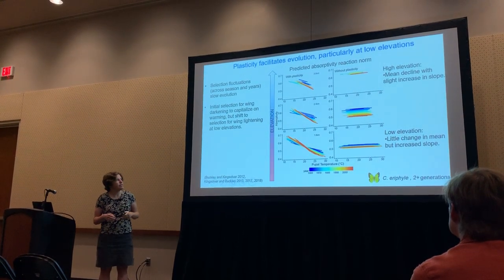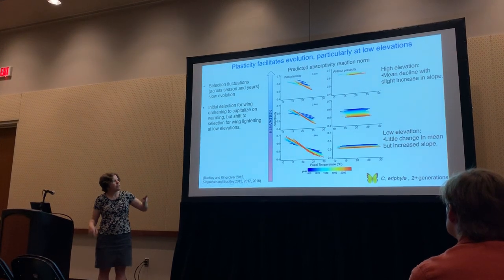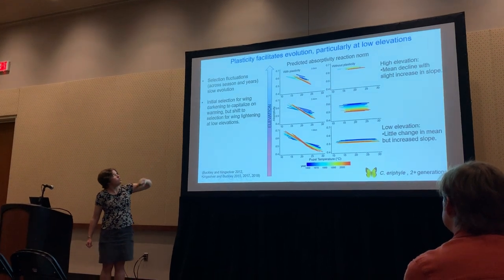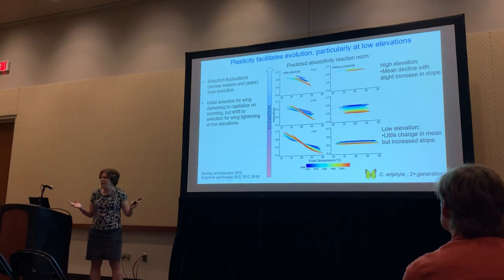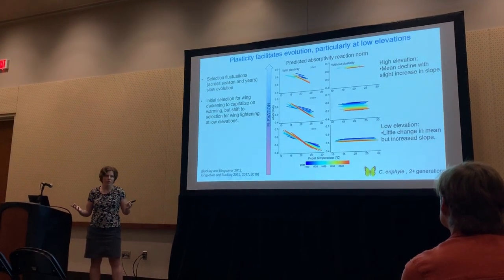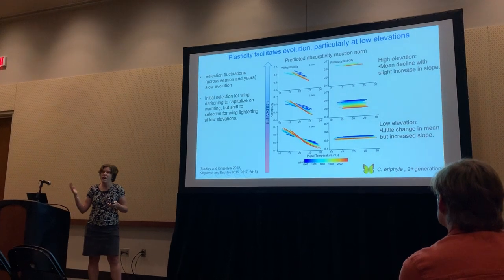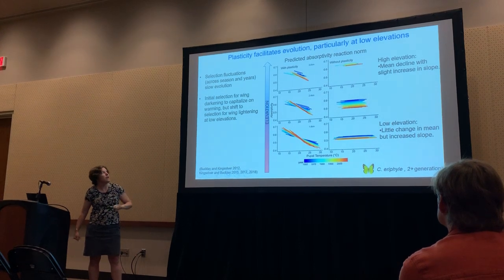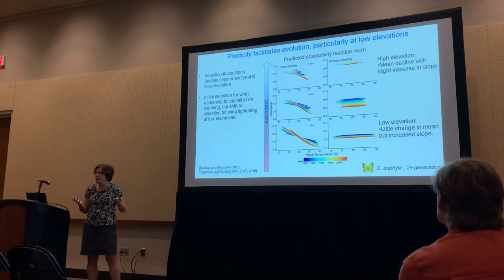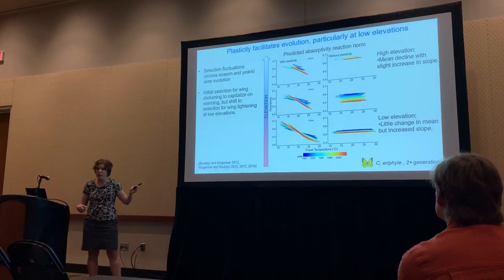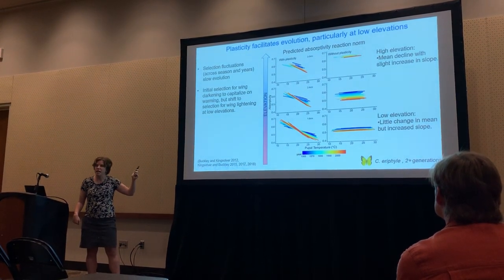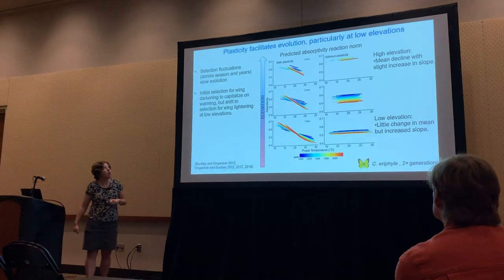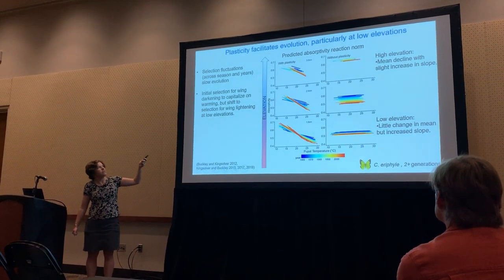We've been working in this system quite a while, so we have results along the single elevation gradient. High elevation sites are at the top. What we see predominantly is that environmental variation plays a big role — we have seasonal variation both between years and within the season that causes tons of fluctuation in the selection gradient, really slowing down evolution. We also see temporal shifts over recent decades in the direction of selection, with a lot of initial selection for wing darkening to capitalize on expanding potential activity times with recent climate change.